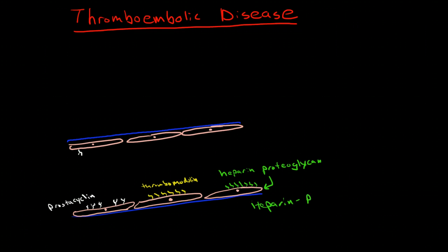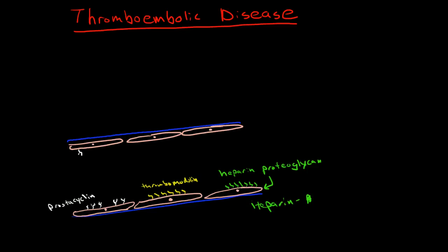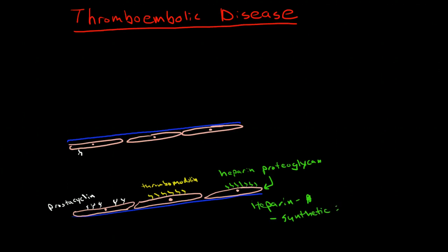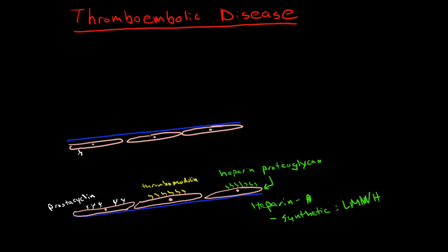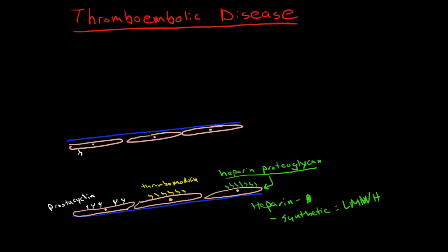Heparin is actually gathered from the endothelial cells of pigs, and now we've figured out how to make synthetic heparins in the form of low molecular weight heparins. But anyway, they are similar to the chemicals that are expressed on the membranes of endothelial cells.